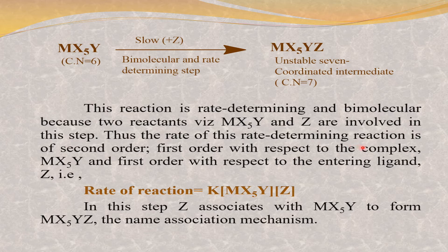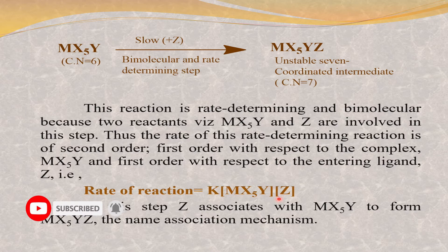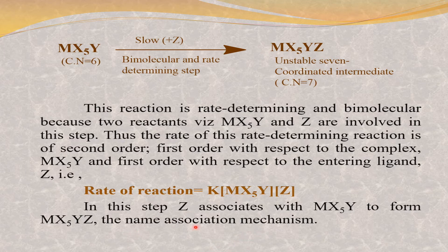The rate of this rate-determining reaction is of second order — first order with respect to the complex MX5Y, and first order with respect to the entering ligand Z. In this step, Z associates with MX5Y, which is why we call it the association mechanism. The attacking nucleophile associates with the complex, hence the name association or displacement mechanism.